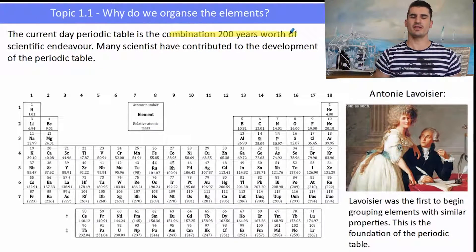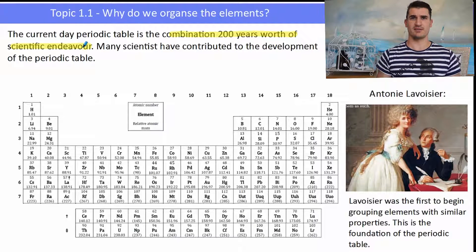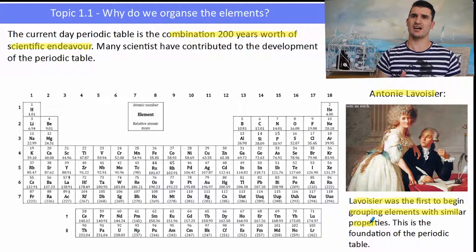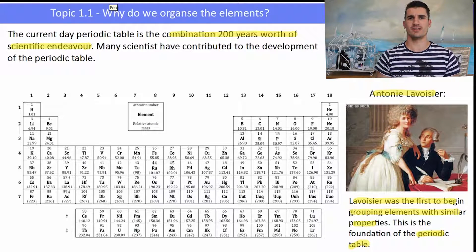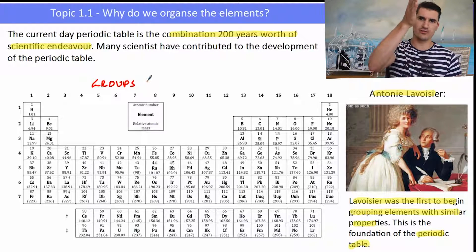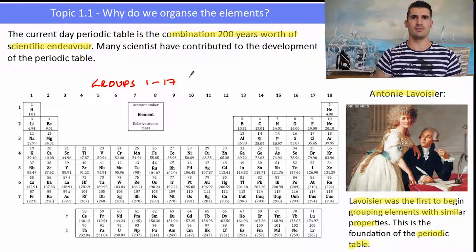The current day periodic table is a combination of 200 years worth of scientific research, and many scientists have contributed to it. One of the first was Antoine Lavoisier, who was the first chemist to start grouping elements with similar properties — and that is the foundation of our current periodic table, which I have on the left. The current periodic table contains groups, which are the vertical columns, numbered 1 through to 18.